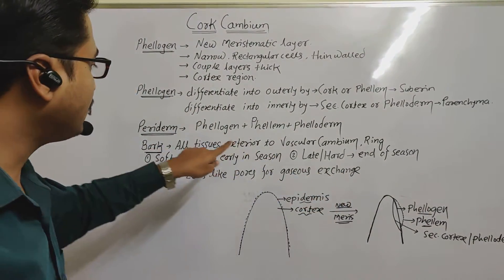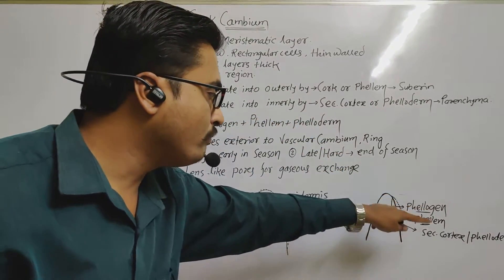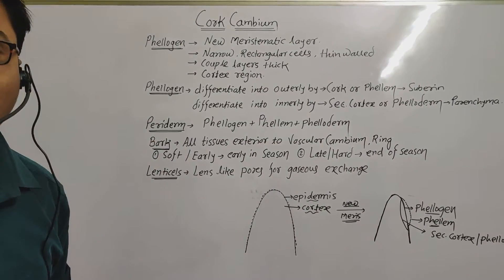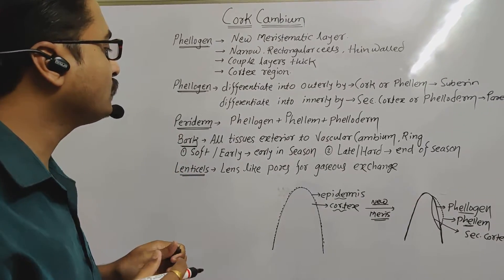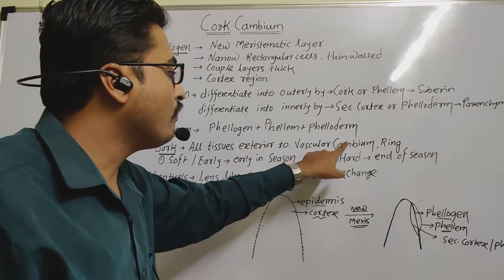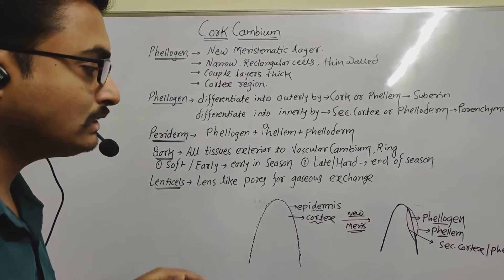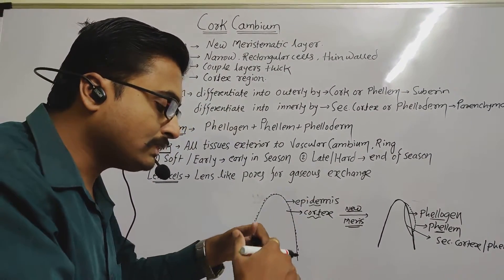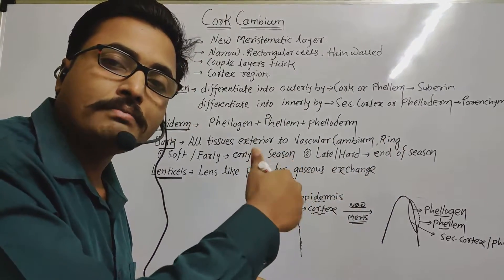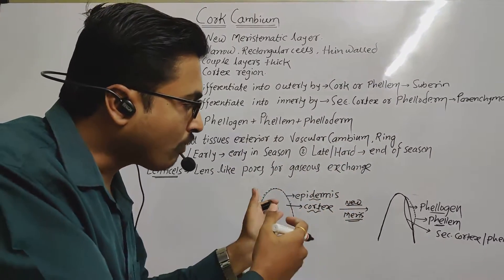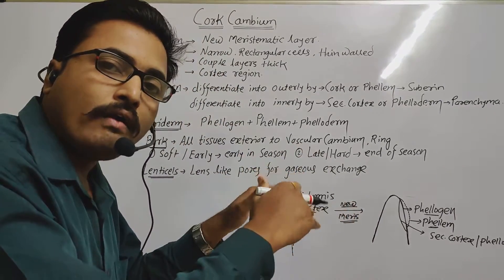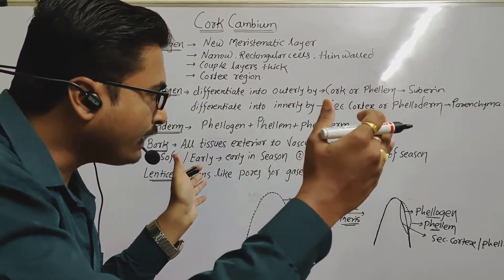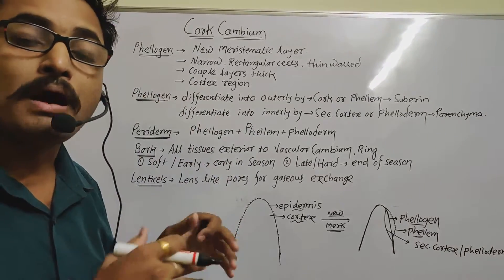The combination of phellum, phelogen, and phelloderm is known as periderm. After periderm, the next concept is bark. Bark means all tissues exterior to the vascular cambium ring. In stem anatomy, after the cambium ring — secondary phloem, cortex, and periderm — is called bark.